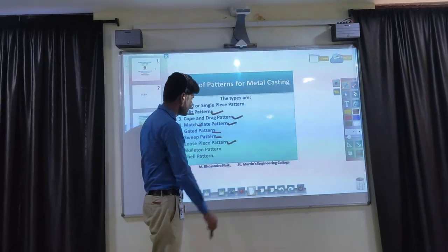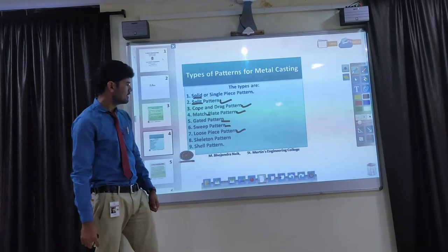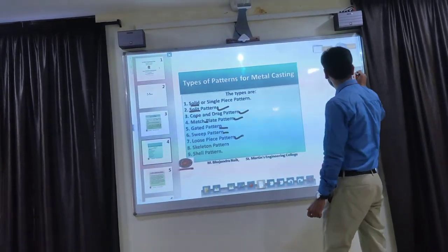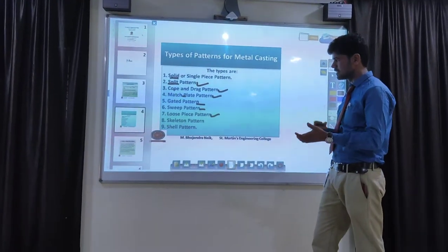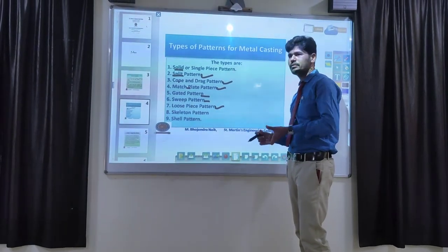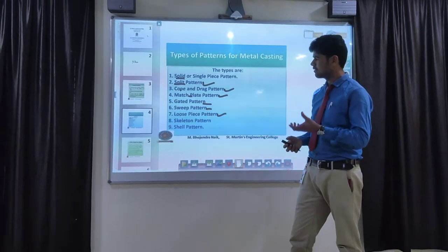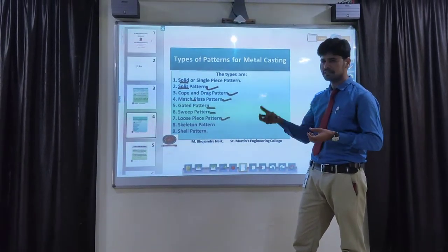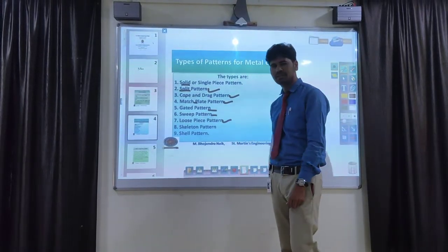Another pattern is called a loose piece pattern. Some objects like seams or complex parts are very difficult to remove from the molding sand — the complexity of the pattern would disturb the entire molding sand while removing. So small loose pieces are attached separately. That pattern is called a loose piece pattern.